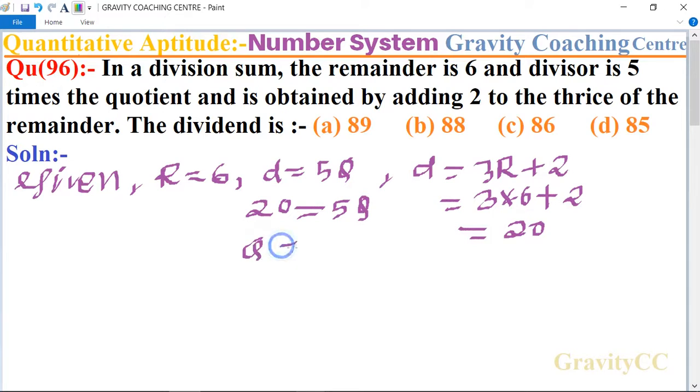So Q = 20/5 = 4. Therefore, we know that the formula: Dividend = divisor × quotient + remainder.